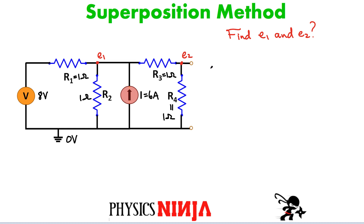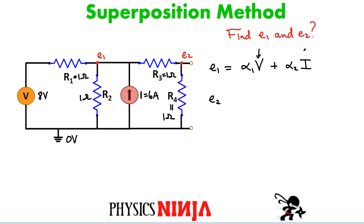The way superposition works is if you were going to do a lot of algebra, what you would find is that the node voltage at E1 and E2 can be written as some number — I'll call it alpha — multiplied by the first source, 8 volts, plus some other number multiplied by the current source. The terms alpha 1 and alpha 2 would only depend on the impedances, or in this case the values of the resistors. These alphas can sometimes be very complicated expressions, but the key is that they don't depend on the voltage nor the current. So we say this is linear in the sources — there are no terms in V squared, no terms in I squared, and no terms where you have V multiplied by I. This is called linear superposition.